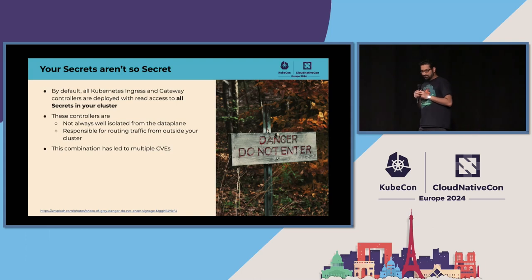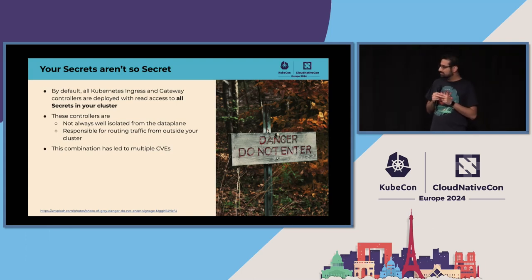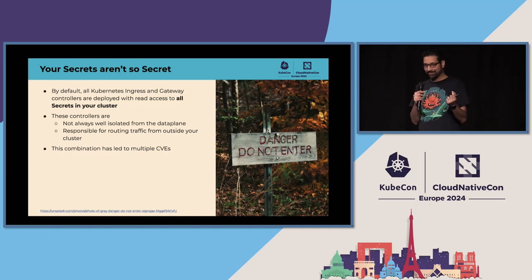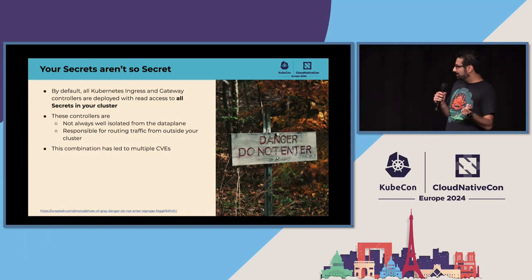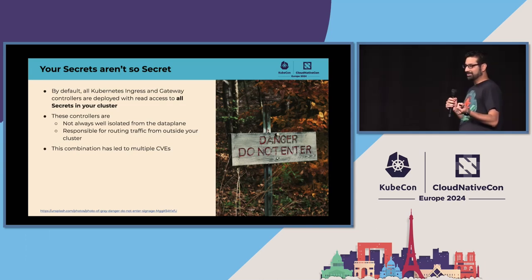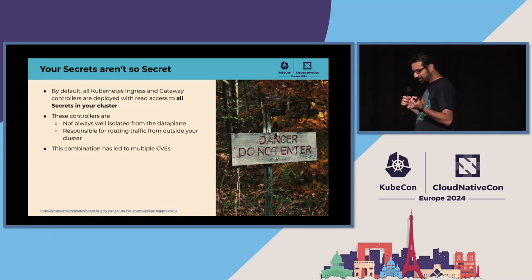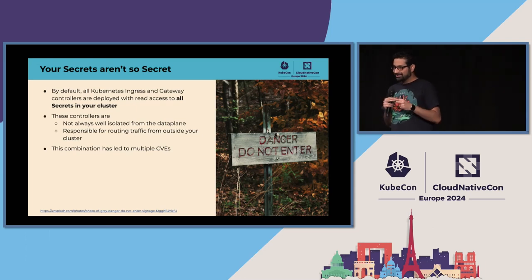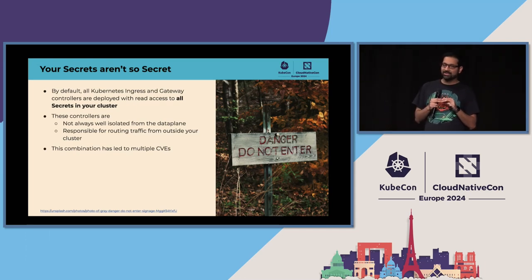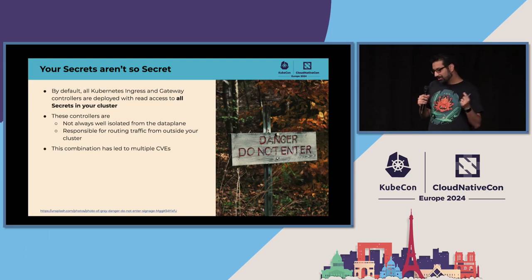The isolation between the data plane and control plane of most Ingress controllers is actually pretty weak. When I say control plane, I mean the Go code that is your Kubernetes controller. And your data plane is the actual raw C code that's running your networking stuff. When you put these things close to each other in ways they weren't designed for, you get CVEs.